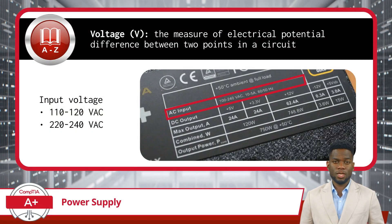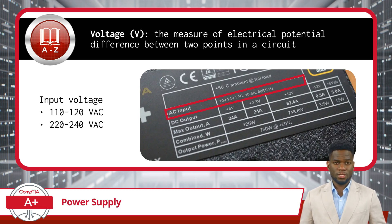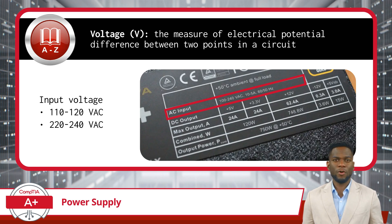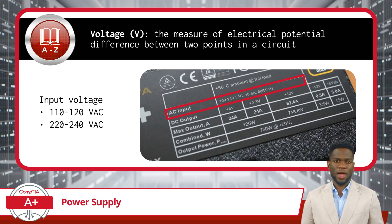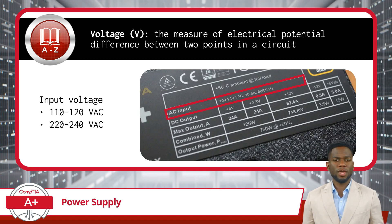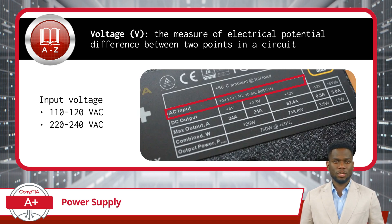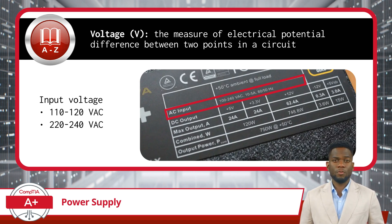Moving forward, the next term we should know is voltage. Voltage refers to the measure of electrical potential difference between two points in a circuit — it is the force or pressure that pushes electrical charges through an electrical circuit. When you plug your desktop PC into a wall outlet, it receives electrical power in the form of alternating current. This alternating current typically comes in two primary voltage standards: 120-volt alternating current (VAC) and 240-volt alternating current. These voltage standards dictate the level of electrical pressure that flows through the wires and into your computer's PSU.